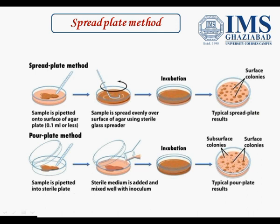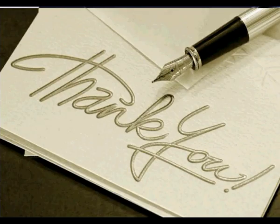In the spread plate method, colonies will only be on the surface. So these are the three basic techniques. Pour plate method is used in industry; spread plate method is used for antibiotic sensitivity testing and isolation of pure culture; and streak plate method is a common technique to separate bacteria from a mixed culture. Thank you.